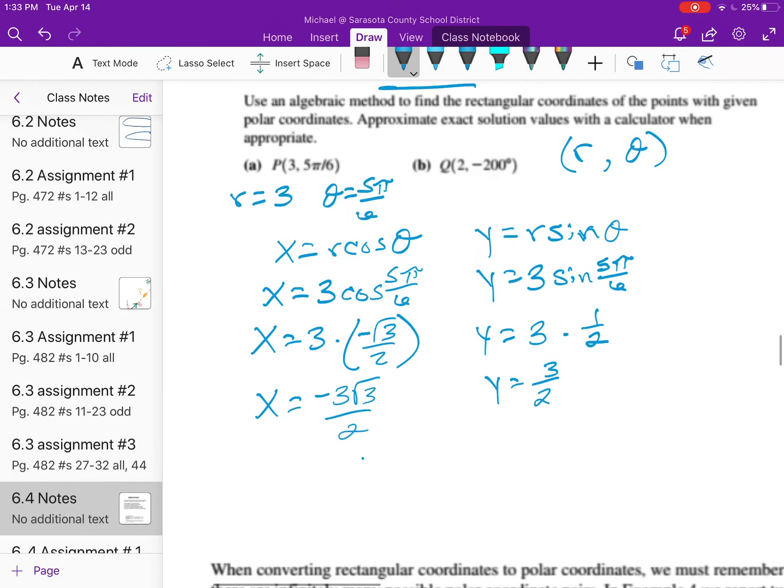Therefore, our conversion is negative 3√3 over 2, comma 3 over 2. So this polar coordinate equals this rectangular coordinate.